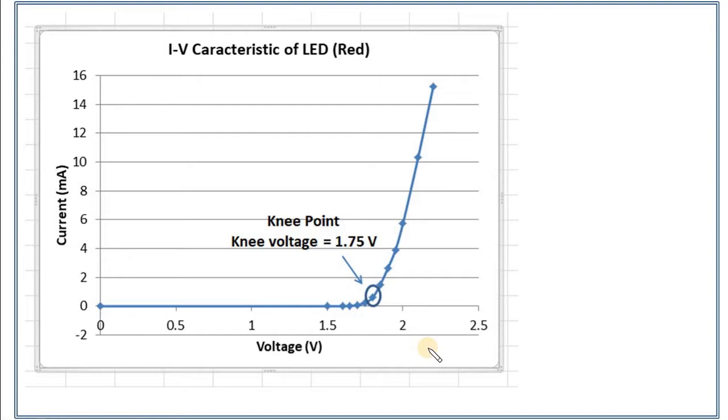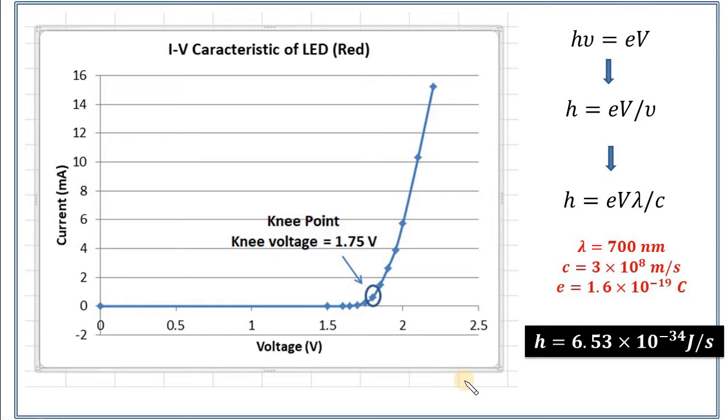Once we know the knee voltage, it will be very easy to calculate it because we know that any color light has some energy associated with it. And energy is nothing but H nu. When electron is jumping from one side of the diode to the other side, then only light is emitted. Therefore, energy is provided by the voltage we are applying. That will be exactly equal to the energy of that light. That means H nu will be equal to EV. That is the amount of energy which we are providing to the electron. Therefore, H nu equals EV. You can just simplify it. H will be EV upon nu. And we know that nu is C upon lambda. If you substitute it here, you will get H equals to EV lambda upon C. Now substitute all the values. Lambda is equal to 700 nanometer for the red light. C is 3 into 10 to the power 8 meter per second. E is the charge on electron. If you substitute all, you will get H is equal to 6.53 into 10 to the power minus 34 joule per second.